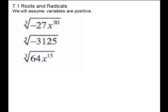A few more problems. Cube root of negative 27 — remember, it is okay to do an odd root of a negative — so this gives us negative 3. For the variable, 3 into 30 goes ten times, so x to the tenth. For the fifth root of negative 3125, just do that on your calculator — it's going to give you a negative 5. Make sure you learn how to do different roots on your calculator. Cube root of 64: we did this on the table — the answer is 4, because 4 to the third is 64. Divide for your exponent: index 3 into 15 goes 5.